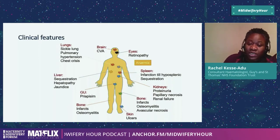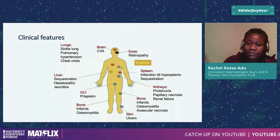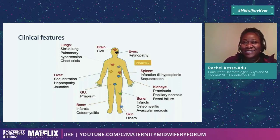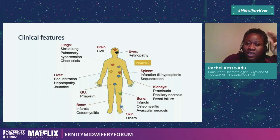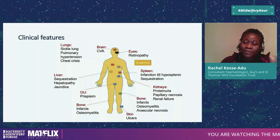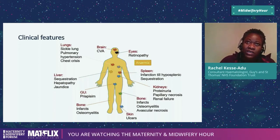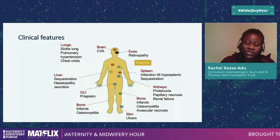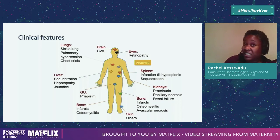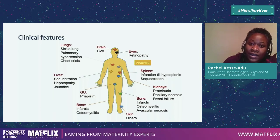Sickle cell affects your blood essentially — name me an organ and I will name you a complication. It's multi-system. The two commonest problems are anaemia, because the lifespan of the red cell is shortened, and pain, because pain is the hallmark of sickle. Imagine putting an elastic band around your finger really tightly and leaving it on for six hours — that's how it feels when you release it. Pretty awful. Pain is the hallmark of the sickling condition.